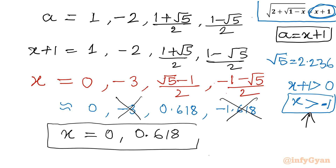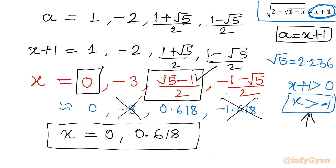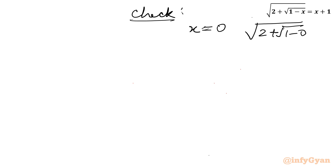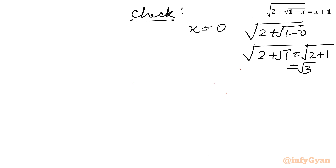Let's check whether these are still true. If I put x equals 0, LHS becomes square root of (2 plus square root of (1 minus 0)), which is square root of (2 plus root 1), equal to square root of (2 plus 1), which is square root 3. RHS is 0 plus 1, which equals 1. Since root 3 does not equal 1, x equals 0 is not a valid solution and we won't accept it.